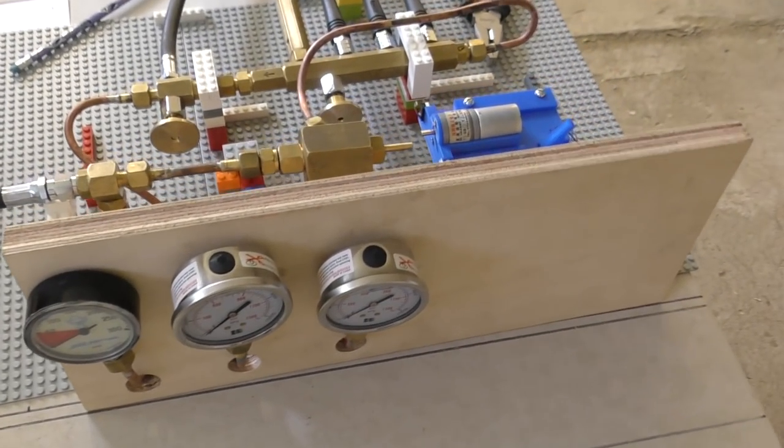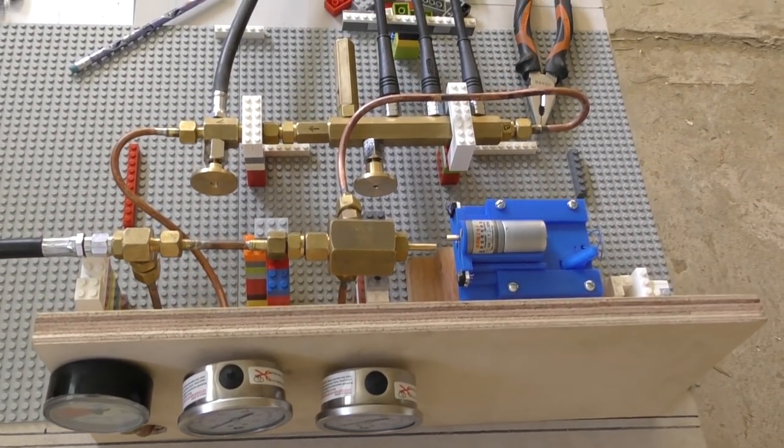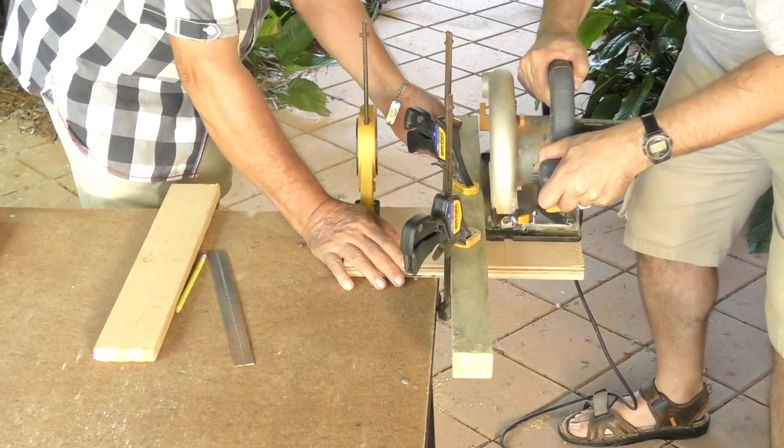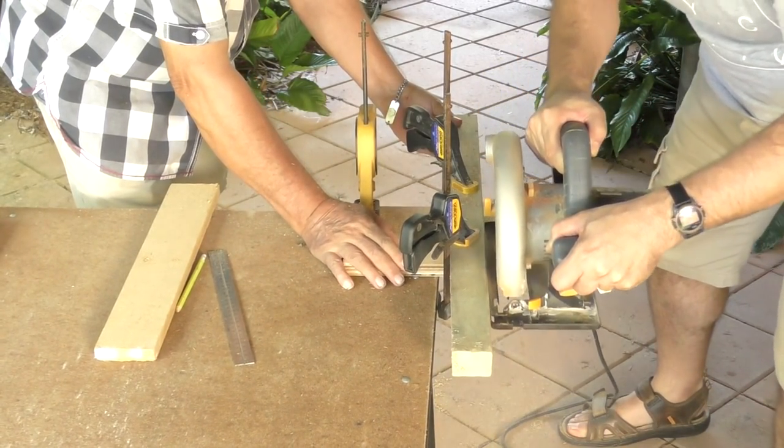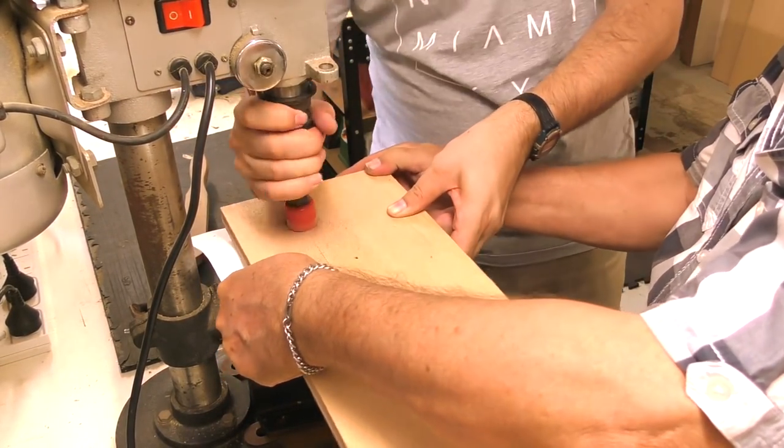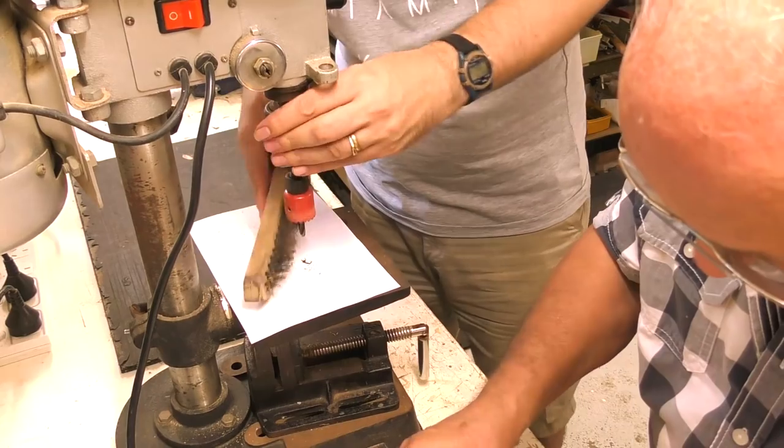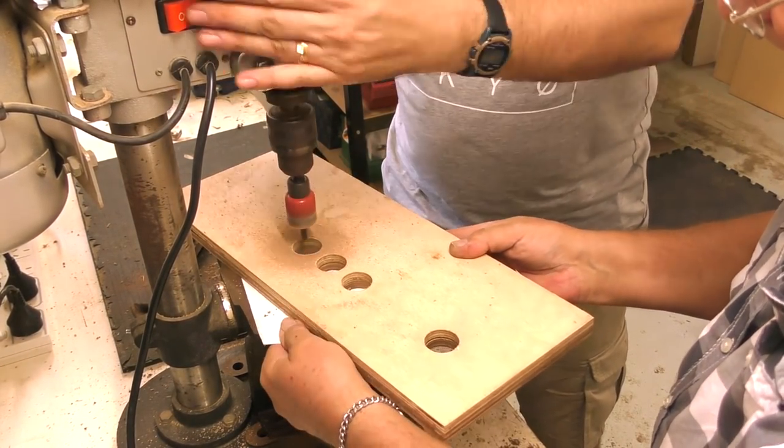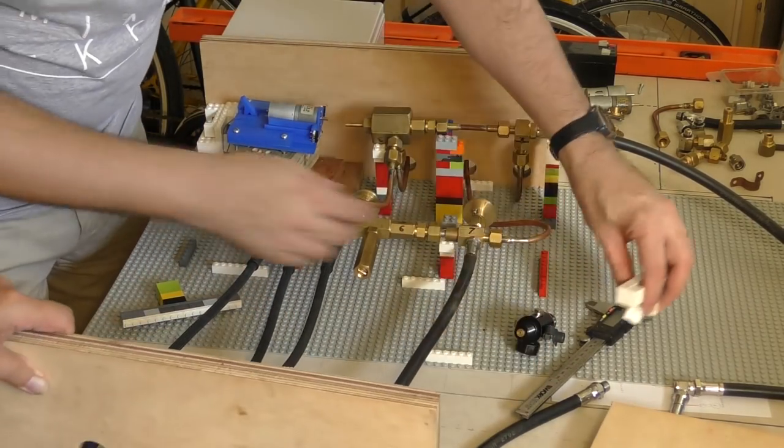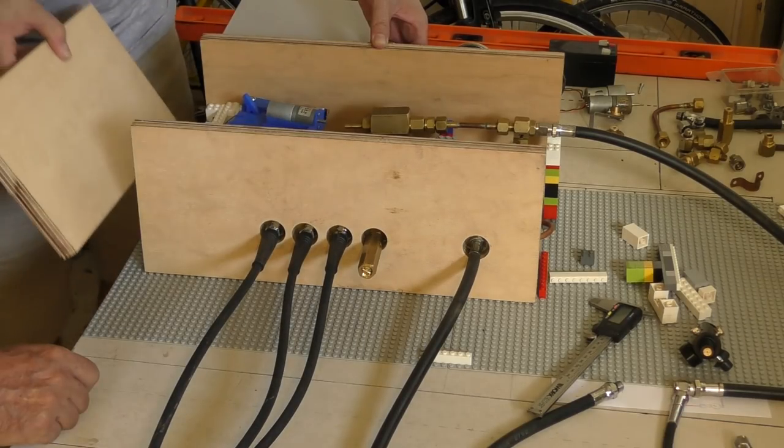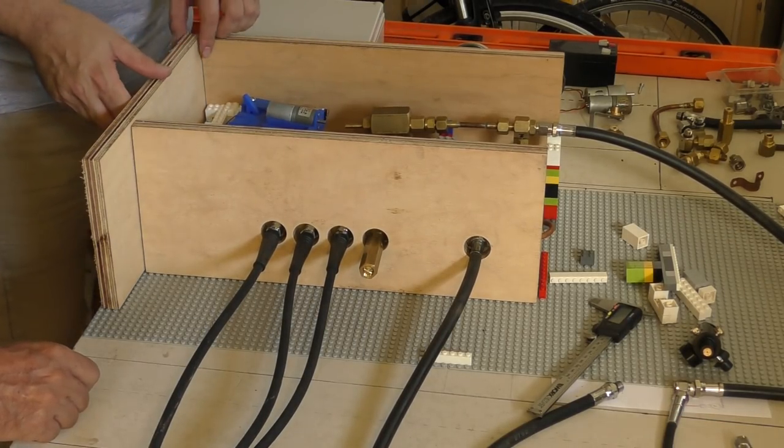This is where the gauges will be mounted. We then set about making the rest of the box. It needed a few more holes for where the hoses would go to the rocket and the scuba tank. The other two walls were then measured and cut to size.